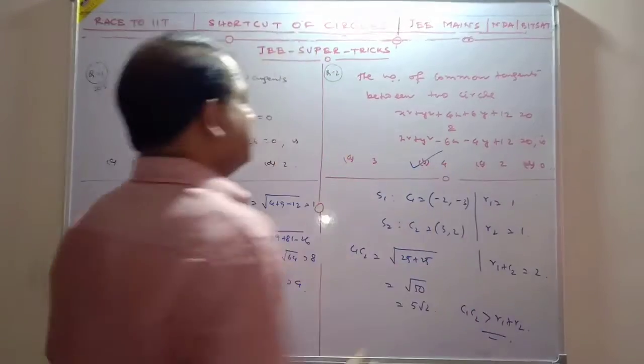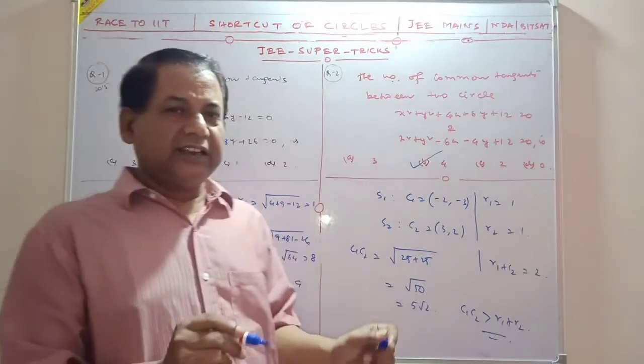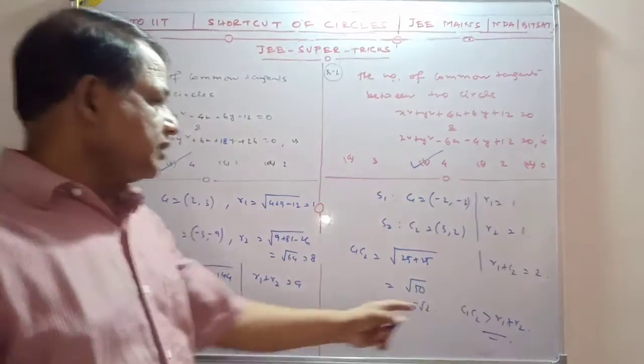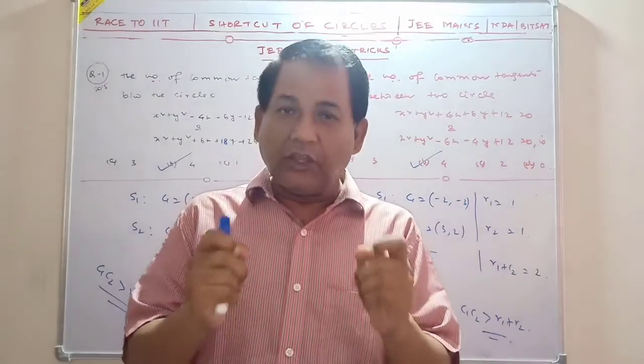So my dear friends, number of common tangents. You should check it like this. You have to remember all these conditions and check like this. When this happens, the number of common tangents is equal to 4.